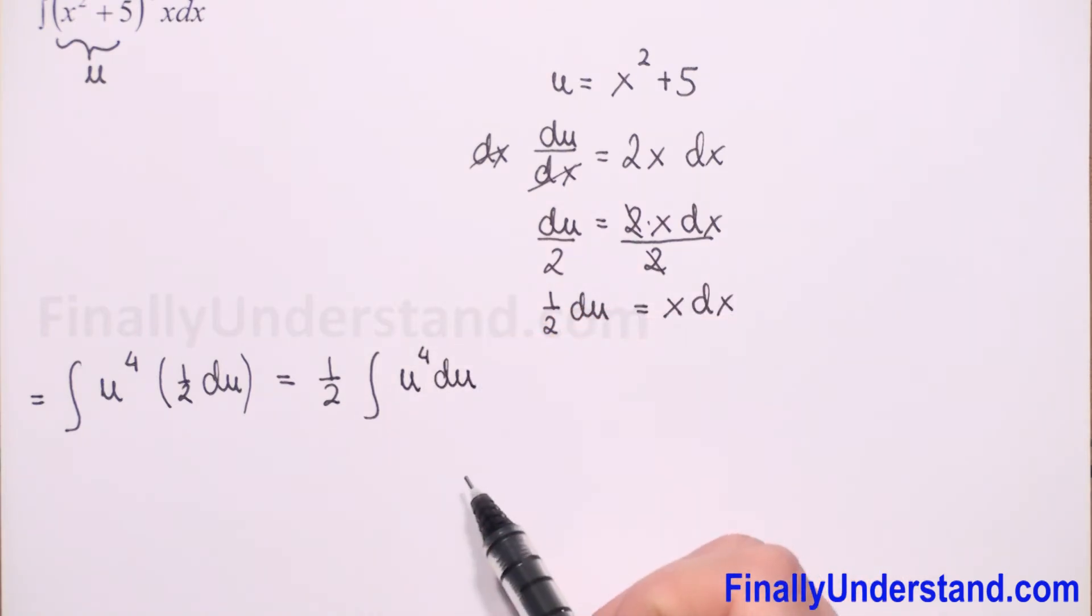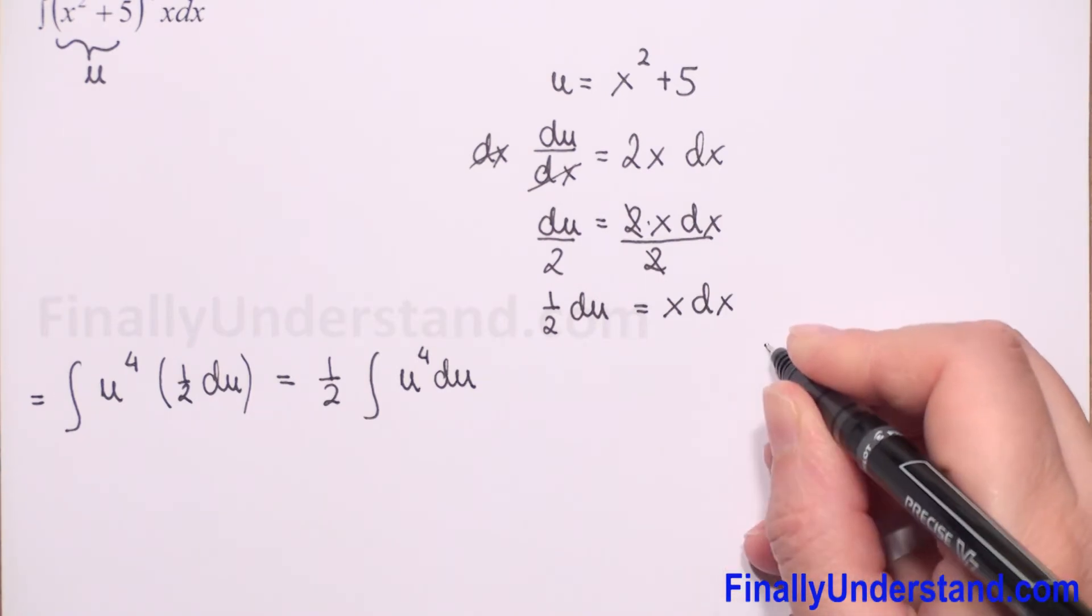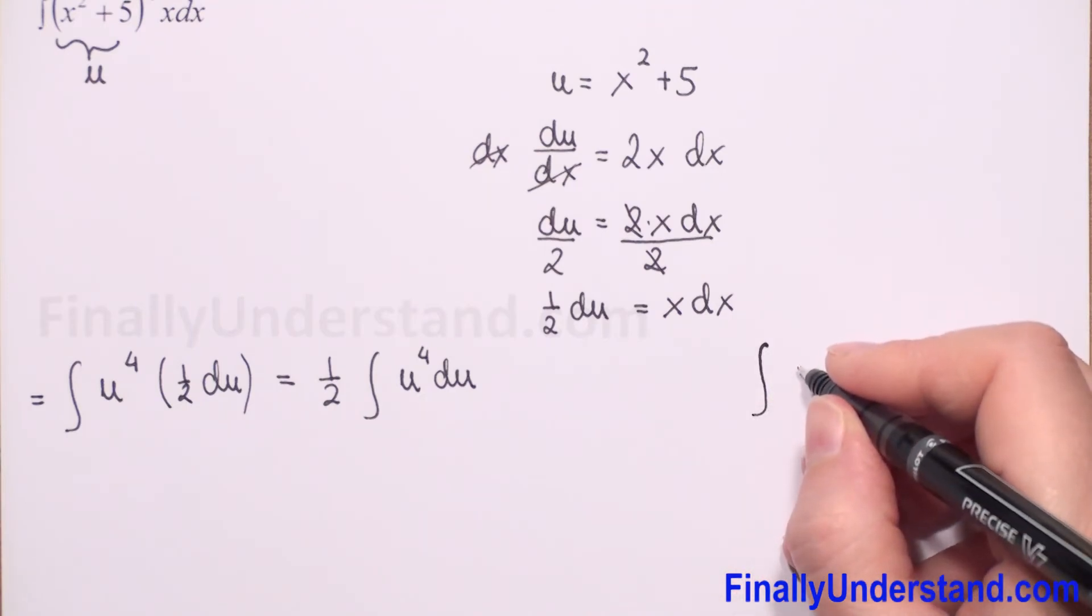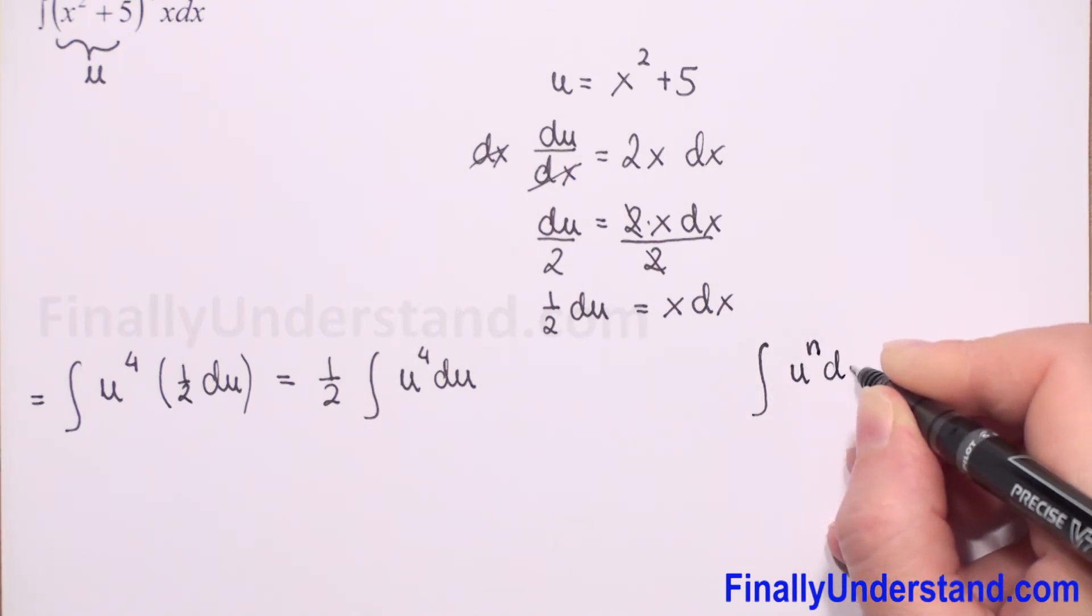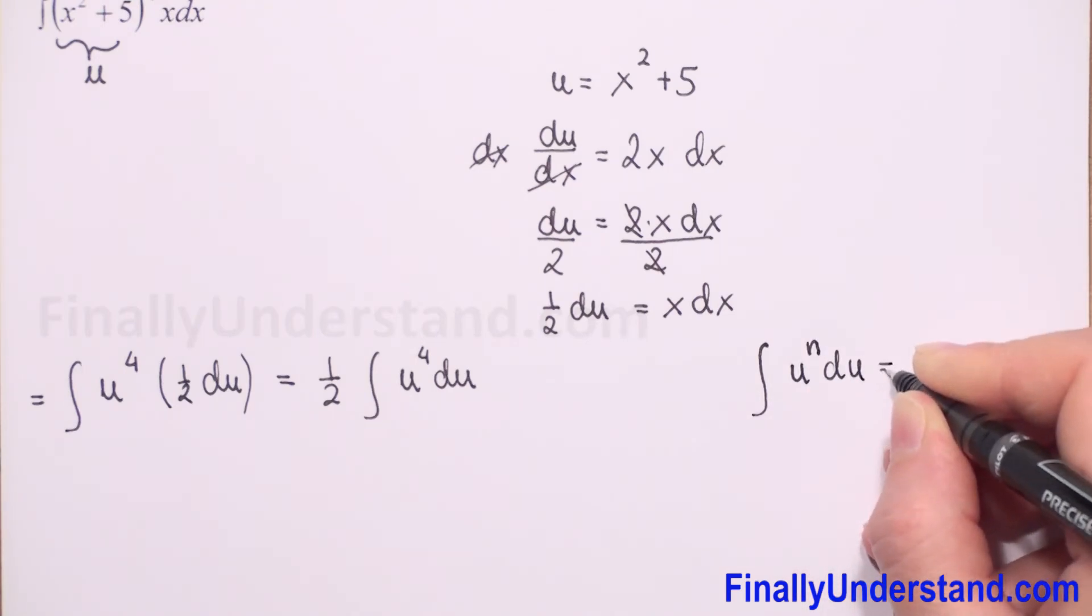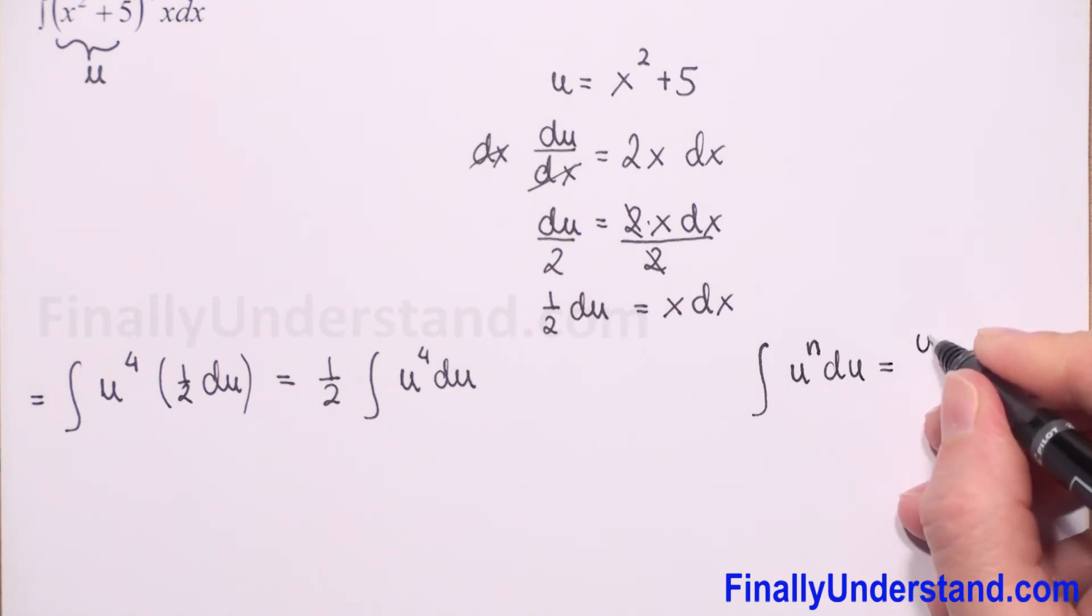Now we have u to the power n with respect to u. Integral of a power function. If you don't remember, I will write this for you. When we have u to the power n with respect to u, integral of course this is equal to u to the power n plus 1 over n plus 1 plus constant C. Of course when we have indefinite integral.